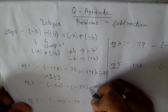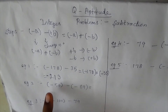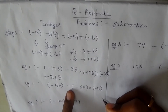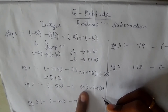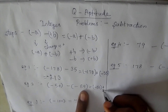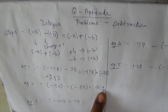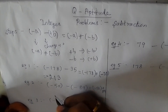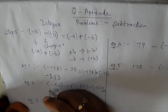Example 2: minus 50 minus minus 89. Write minus 50 as it is. The minus sign changes to plus, so minus 89 becomes plus 89. The signs are now different, so you subtract. 89 minus 50 is 39. The greater number is positive, so the answer is plus 39.